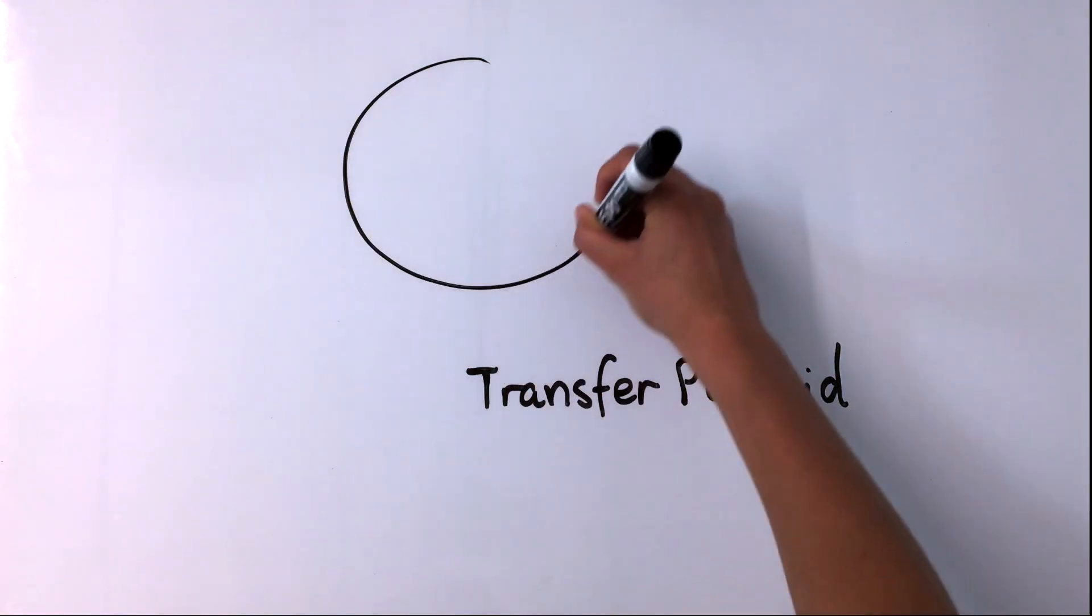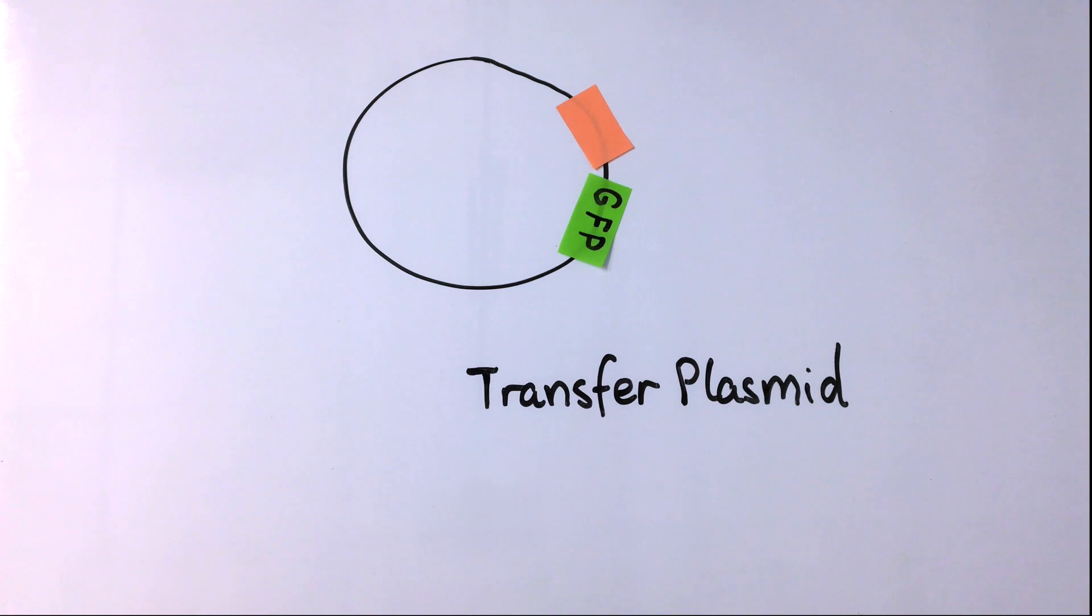The AAV plasmid I'll review in this video is a basic AAV control plasmid encoding GFP. First question: how do I even know this is an AAV plasmid?